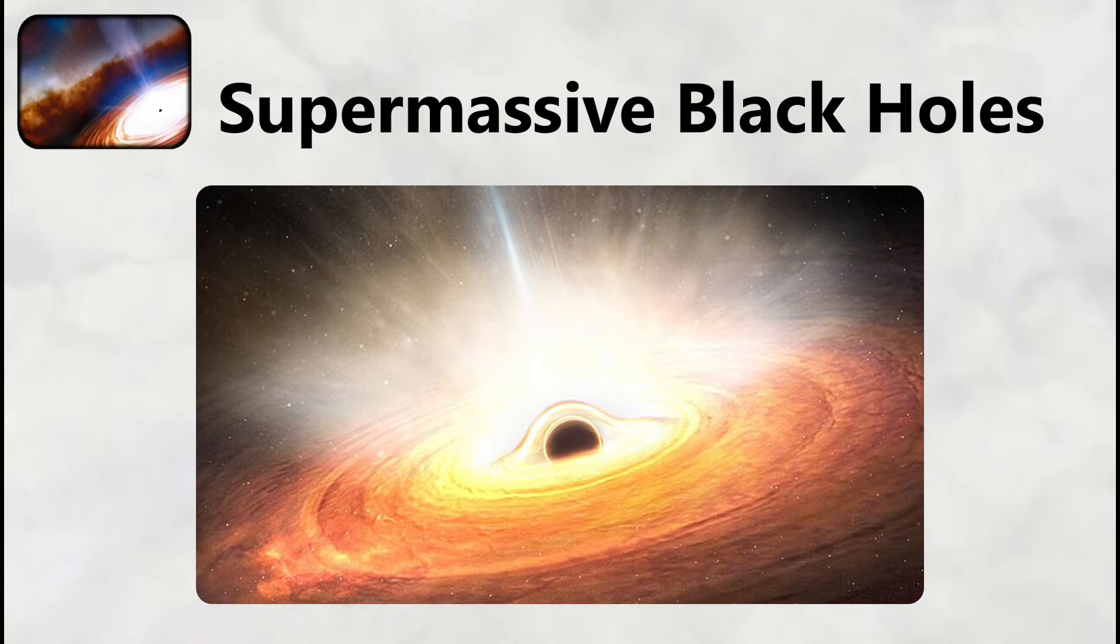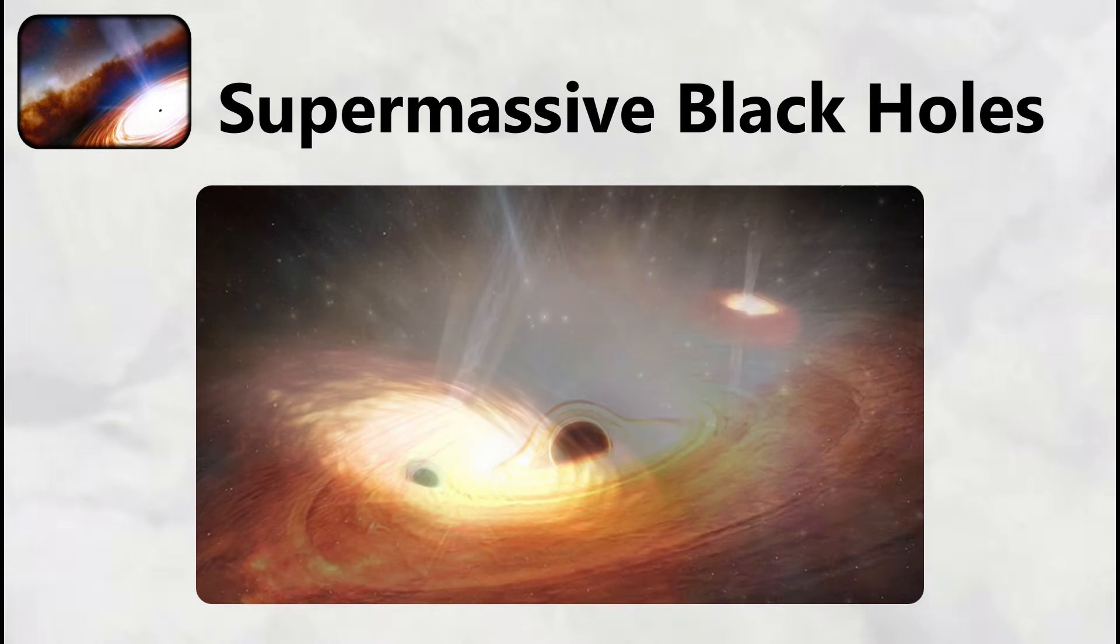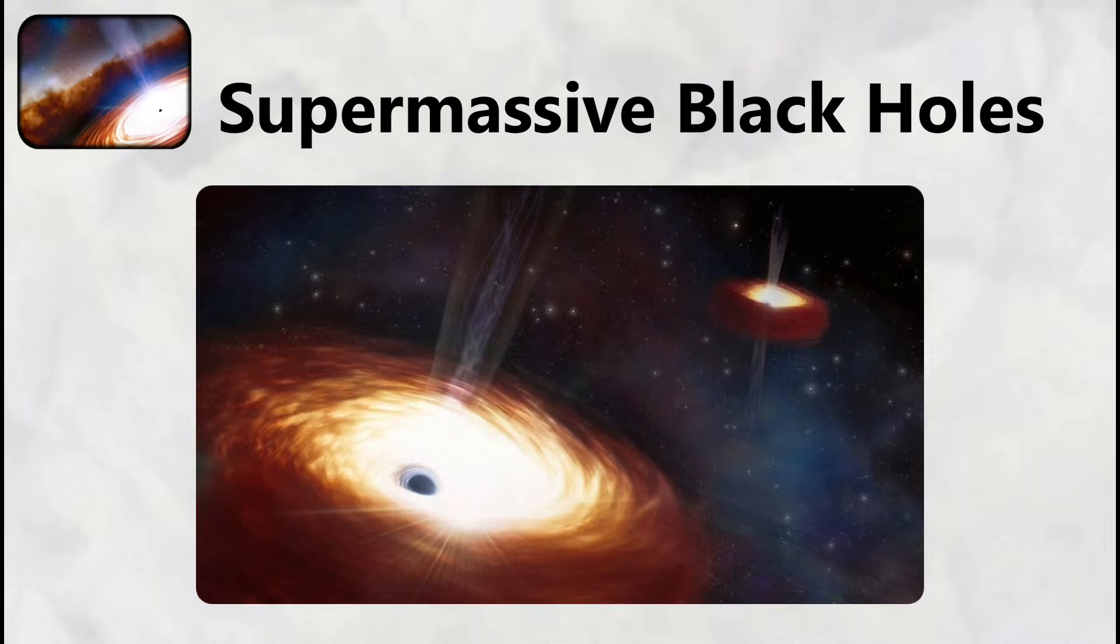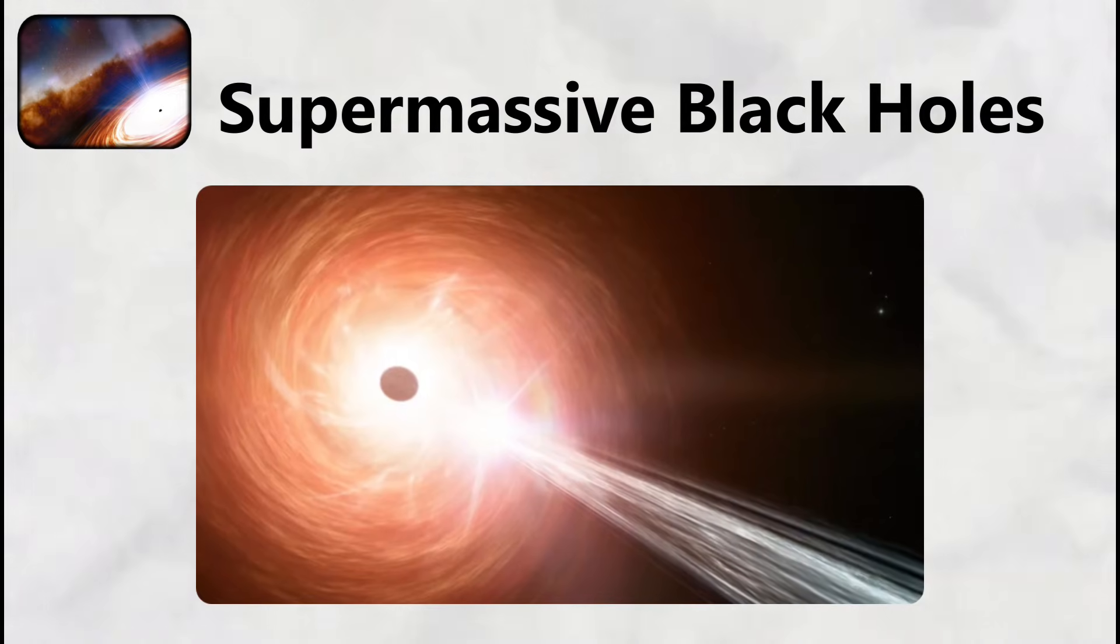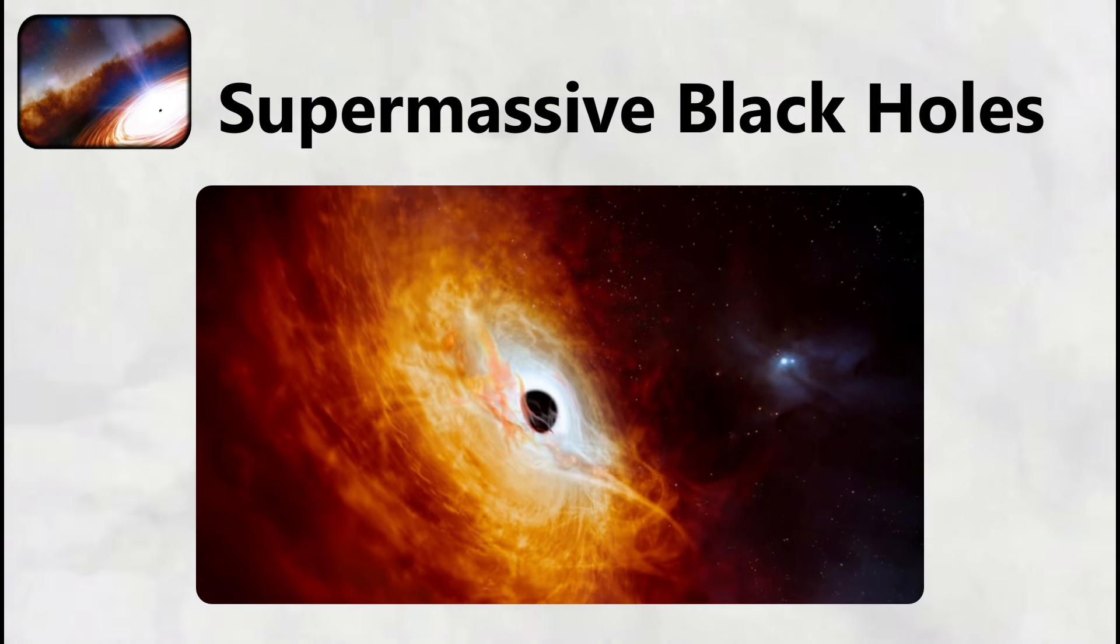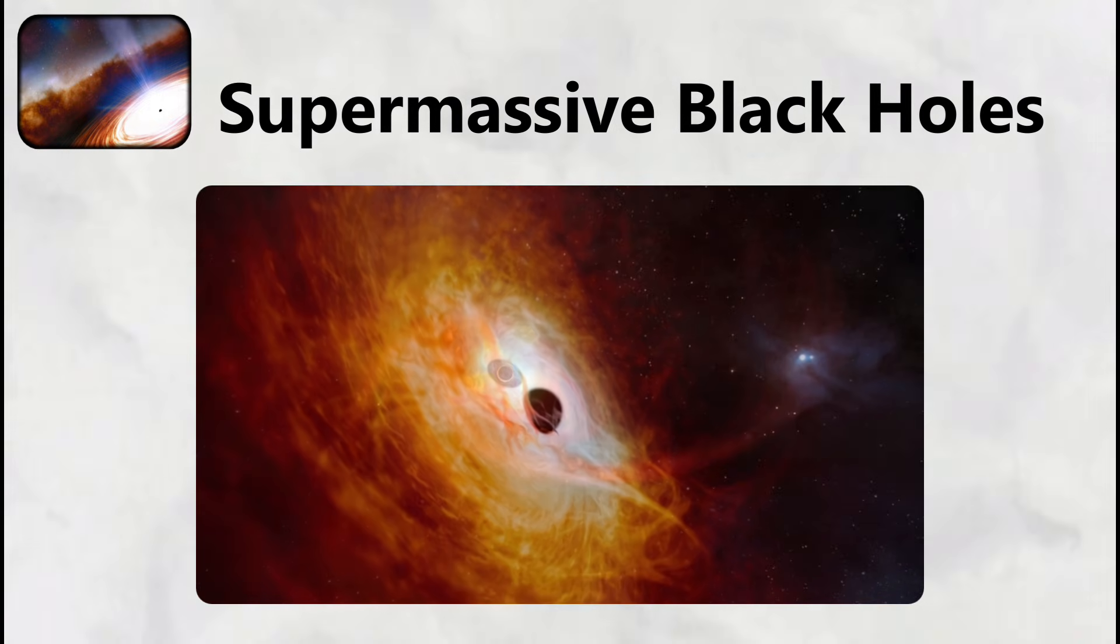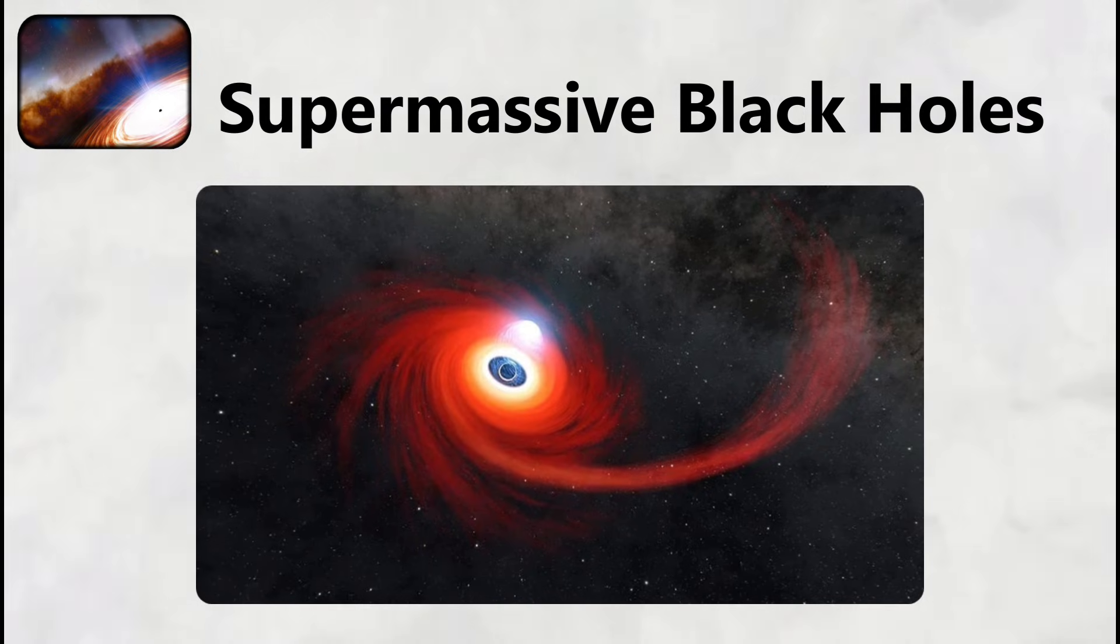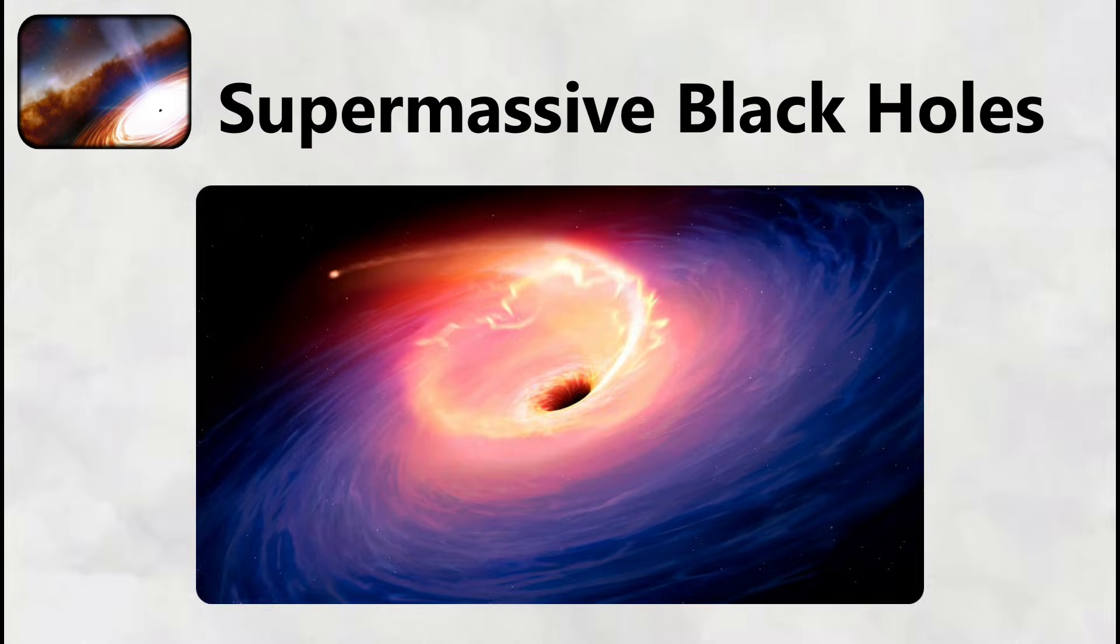Matter falling toward a supermassive black hole accelerates to significant fractions of the speed of light, heating up through friction to temperatures exceeding 100 million degrees Celsius, and creating an accretion disk that glows brighter than billions of stars. The gravitational forces near these monsters are so intense that they stretch objects through a process called spaghettification, where the difference in gravitational pull between an object's head and feet becomes so extreme that it tears the object apart at the molecular level.